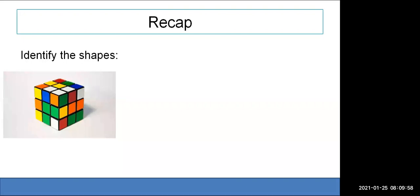A 3D object is not something we just draw on a flat surface — we need height, width, and length to describe it. Objects with all three dimensions are called three-dimensional objects. Now, can you identify the object shown on the screen?